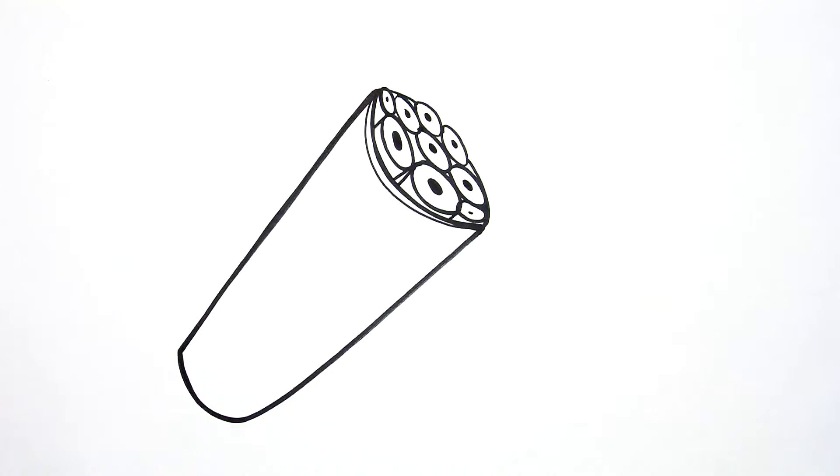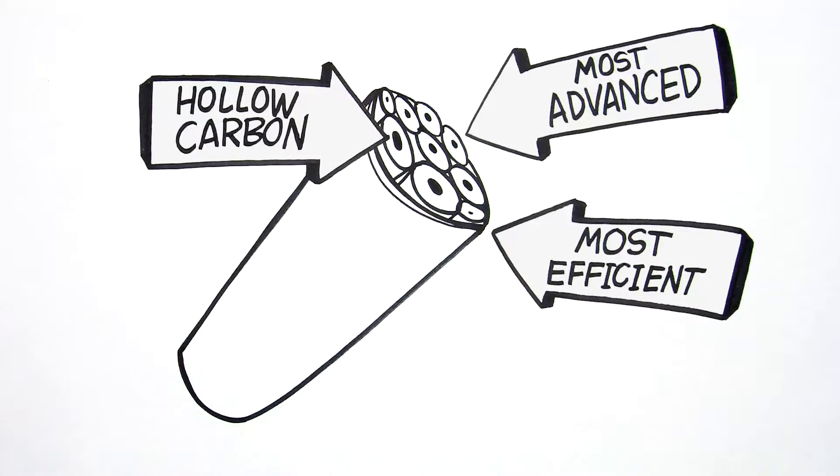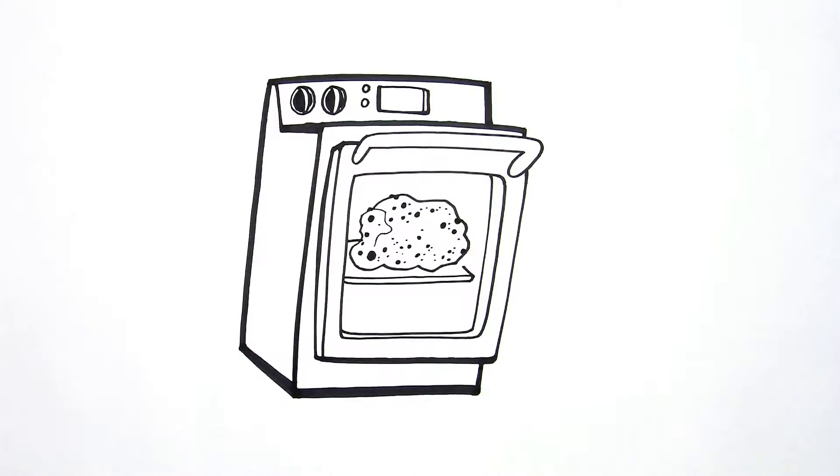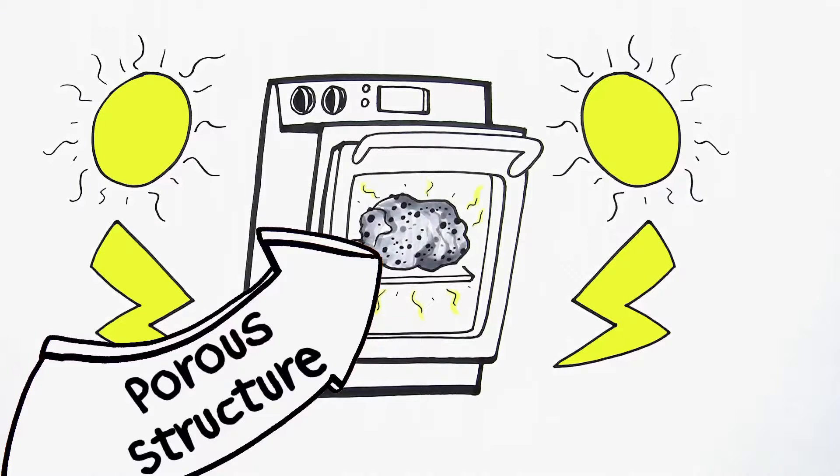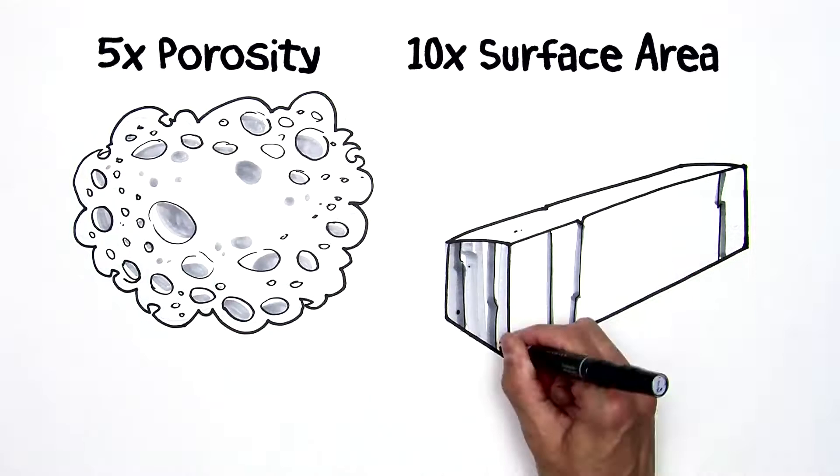Hey, that's where the work gets done. Our patented Holocarbon is the most advanced media available. We start with high-grade catalyst carbon and process it to create a porous structure with tons of surface area. Holocarbon has five times the porosity and ten times the surface area of coconut carbon.